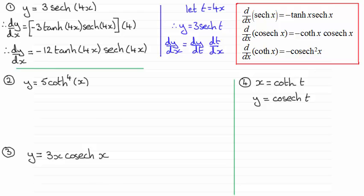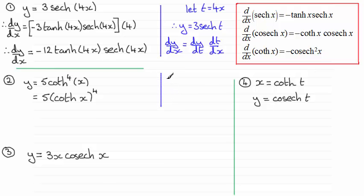In this next one we have y equals 5 coth to the power 4 of x. We can think of this as 5 times coth(x) all to the power 4. For this one we again use the chain rule. Let t equal coth(x), so therefore y equals 5t to the power 4.